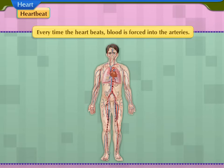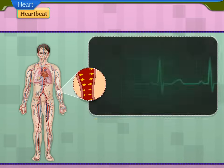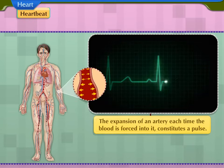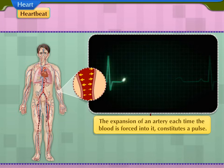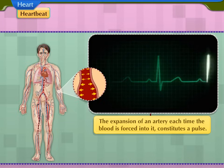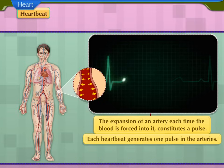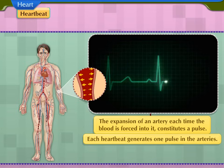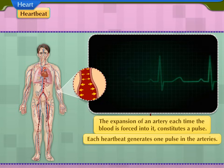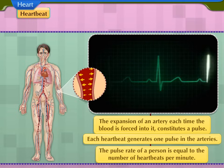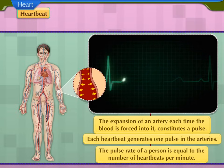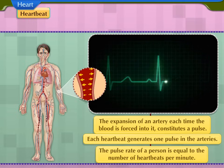Heartbeats can easily be heard through an instrument called a stethoscope. Every time the heart beats, blood is forced into the arteries. The expansion of an artery each time the blood is forced into it constitutes a pulse. Each heartbeat generates one pulse in the arteries. Hence, the pulse rate of a person is equal to the number of heartbeats per minute.